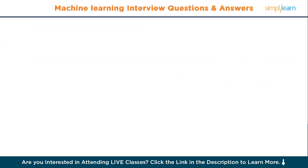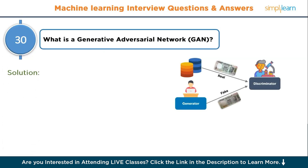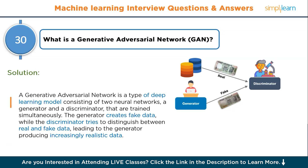The thirtieth and final question: what is a generative adversarial network (GAN)? A generative adversarial network is a type of deep learning model consisting of two neural networks — a generator and a discriminator — that are trained simultaneously. The generator creates fake data while the discriminator tries to distinguish between real and fake data, leading to the generator producing increasingly realistic data.